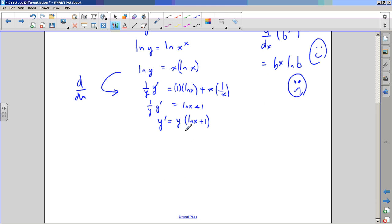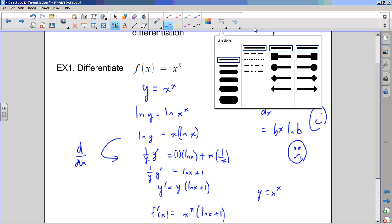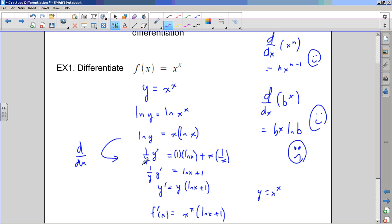There's the derivative of f at x defined implicitly. But remember, y is just x to the exponent x. So in final form, x to the exponent x times the ln of x plus 1 is the derivative. This technique of taking the log and then taking the derivative is called logarithmic differentiation.